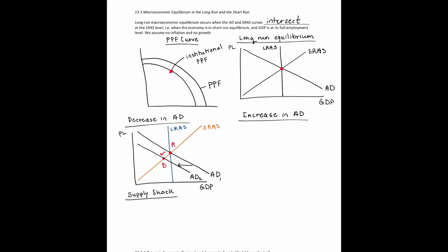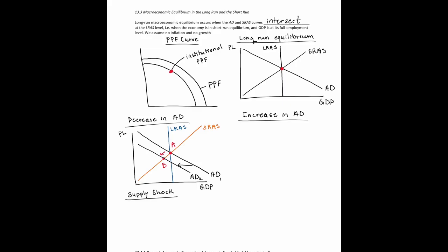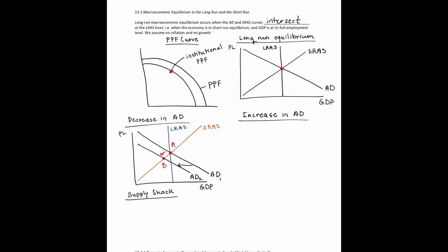What happens eventually is workers will accept lower wages and firms will expect lower prices, which is going to cause the short-run aggregate supply curve to shift right, restoring long-run macroeconomic equilibrium. But the price level overall is going to be lower. So we see a right shift of SRAS, a restored macroeconomic equilibrium, and price level has fallen.